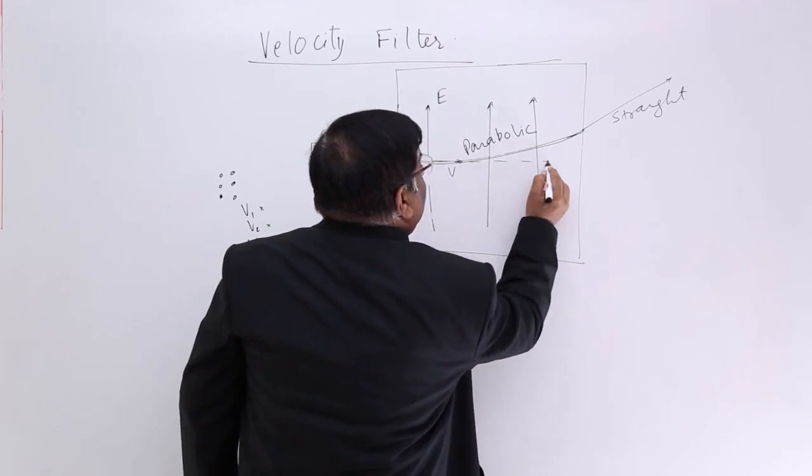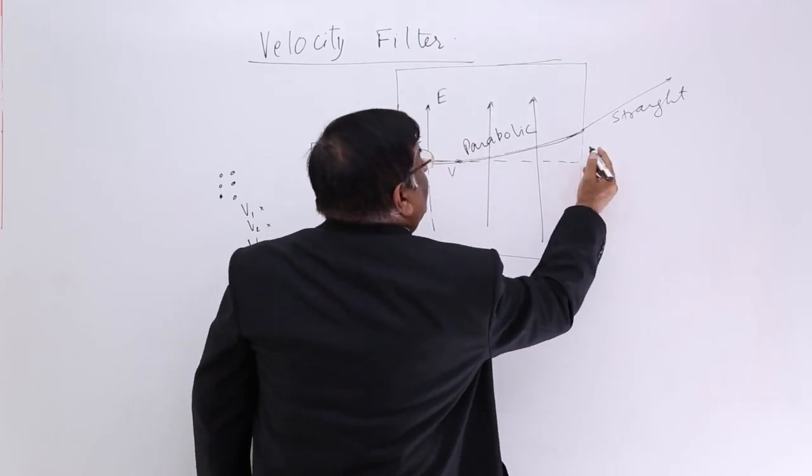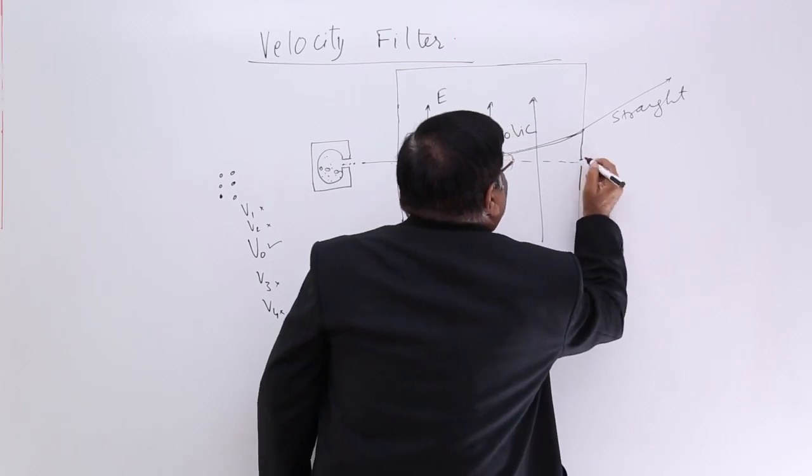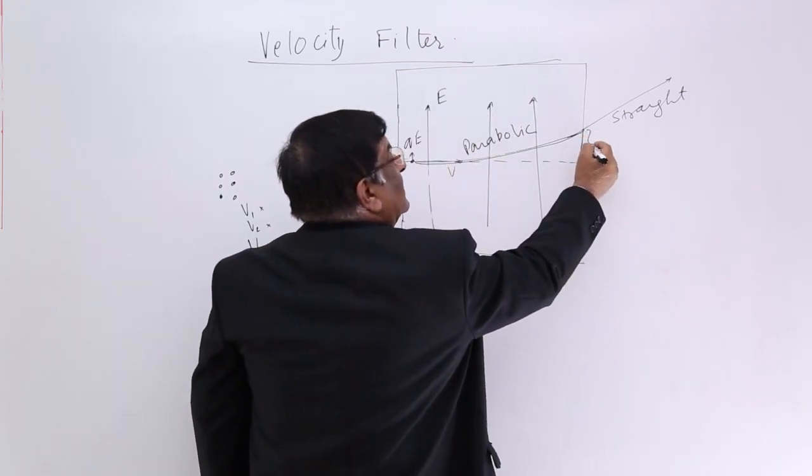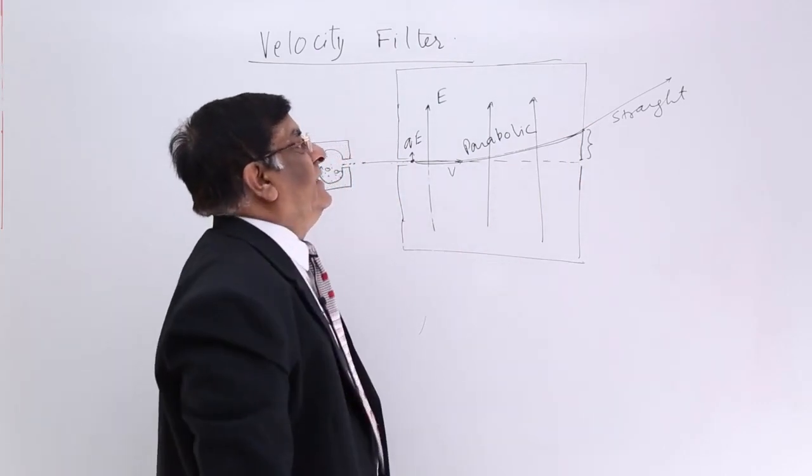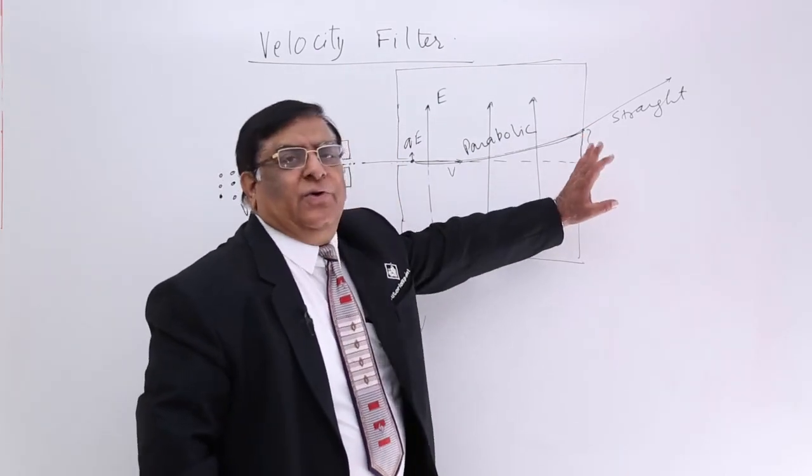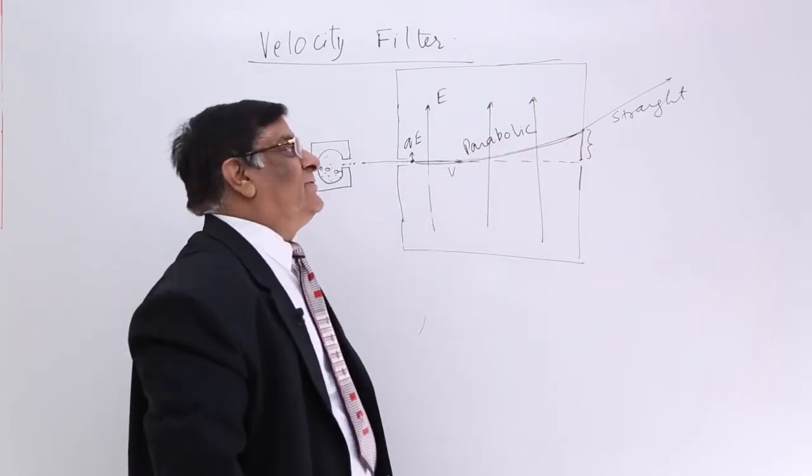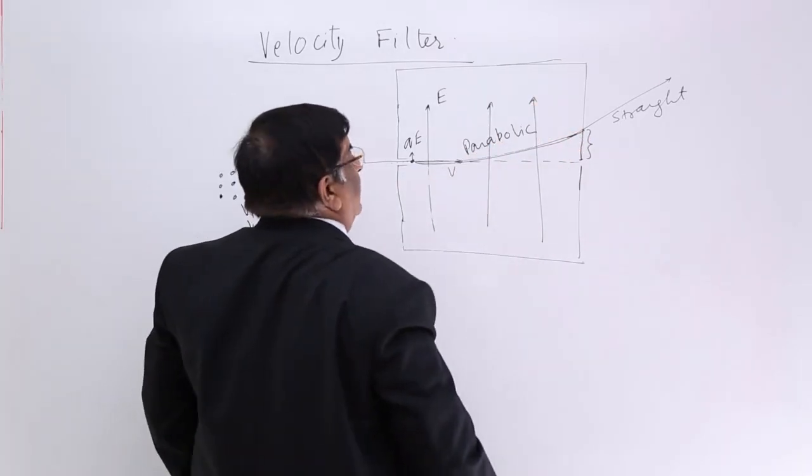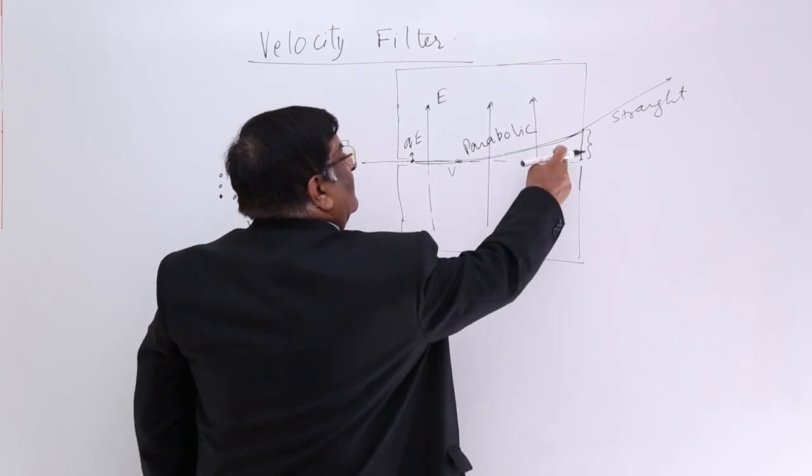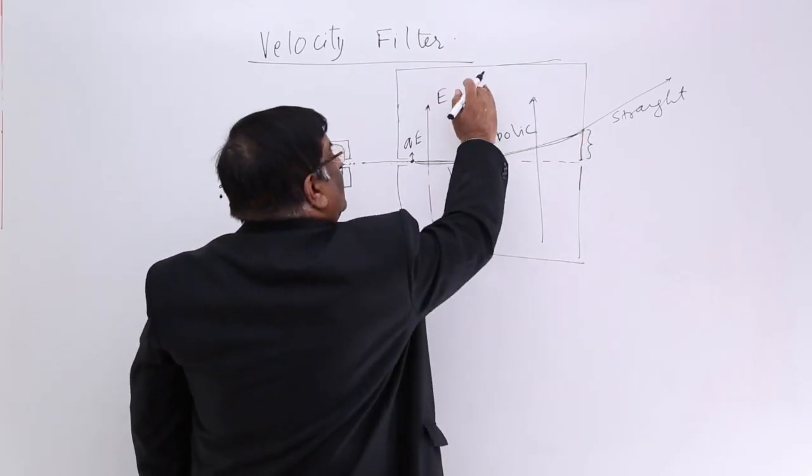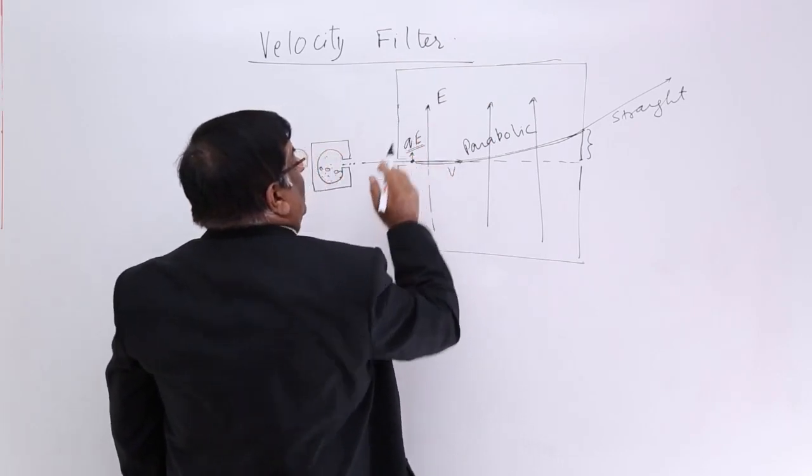But if we have a window here, then it is striking so much above the window. We can calculate with help of projectile formulas. Here we know that it will go up and strike somewhere here because of this force. How much force? QE which is upward.